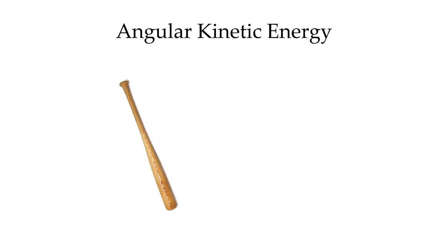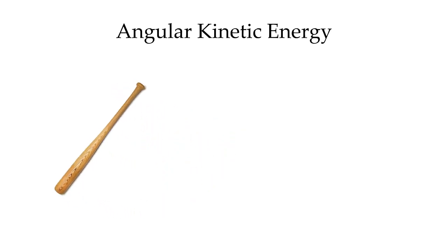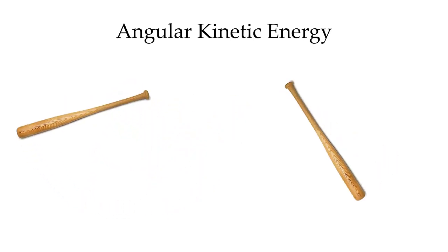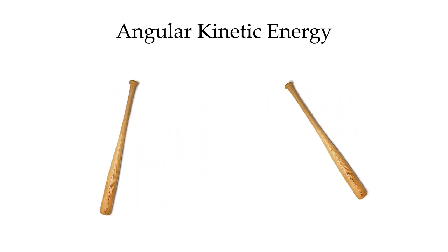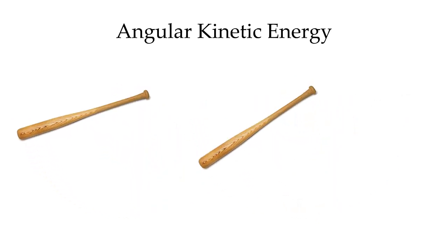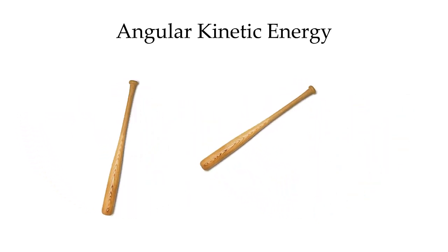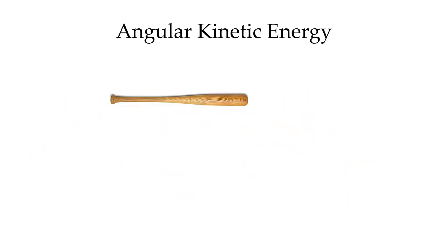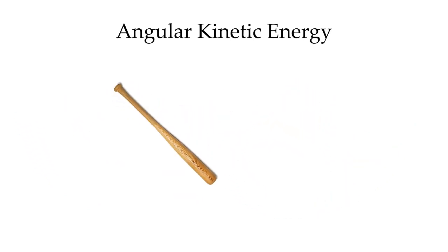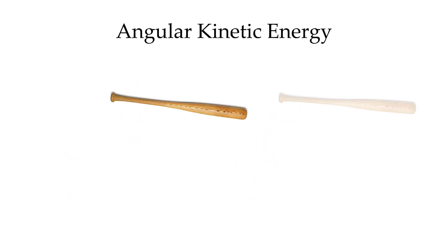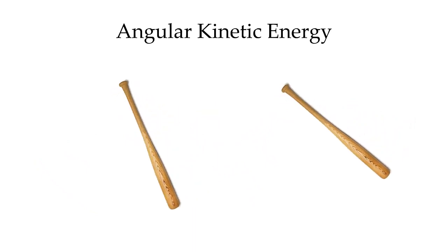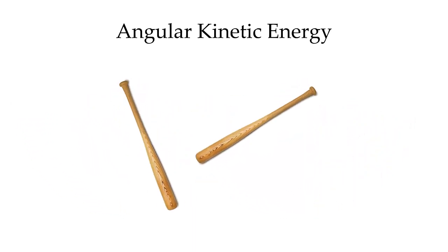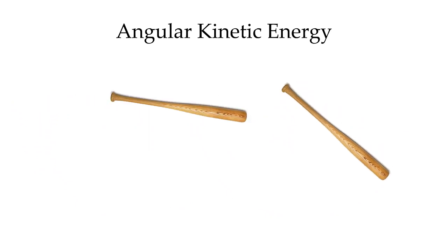If a bat is rotating, it's going to have a certain amount of angular kinetic energy. If that bat starts to rotate more rapidly, it will have an increase in its angular kinetic energy. Similarly, if it ends up rotating more slowly, it's going to have a decrease in its amount of angular kinetic energy.